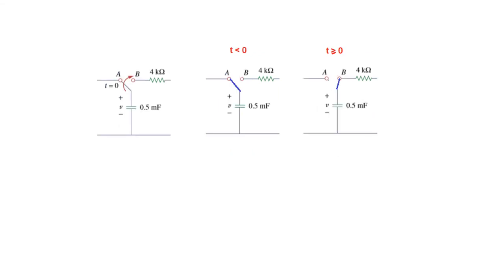Here is another type. It is moving from position a to b at t is equal to 0. That means before t is equal to 0, this is closed. You have to see the direction of the arrow — it is moving from a to b. After t is equal to 0, it is moving to position b, so after t greater than 0 it has moved from a to b.